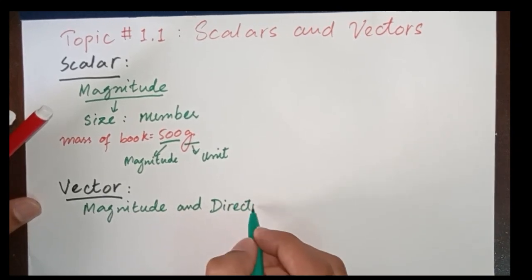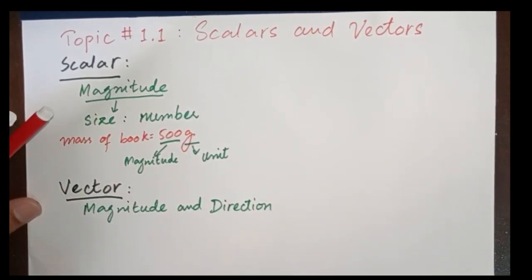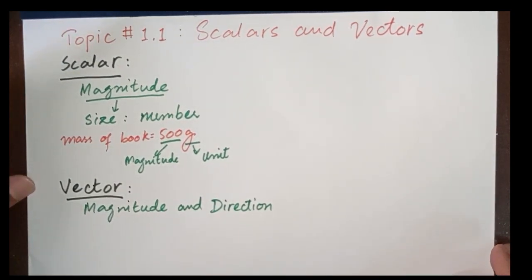If any one of these things are missing, vector cannot be specified. Or we can say a vector quantity is described completely only if the magnitude and direction both are stated.